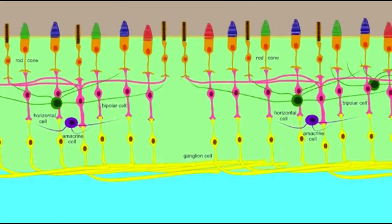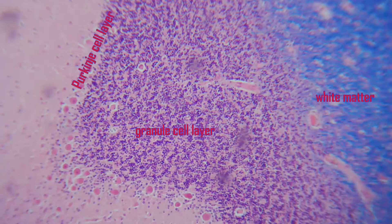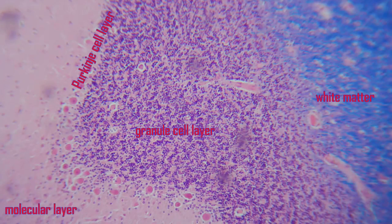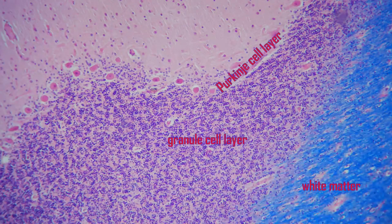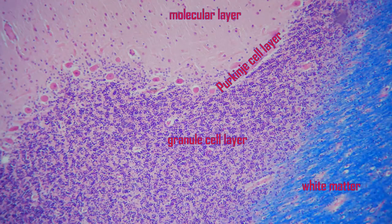In humans, these can be found as the amacrine and horizontal cells in the retina. They can also be found in the granule cell layer of the cerebellum as unipolar brush cells, and also in the cochlear nucleus.